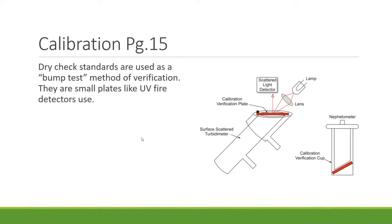There are also dry tack standards — a bump test or reference verification method. These are similar to the small plates used for UV fire detection, where plates of different darkness or filtering represent different concentrations. You hold them in front of the sensor to represent a specific concentration for whichever unit your device uses.